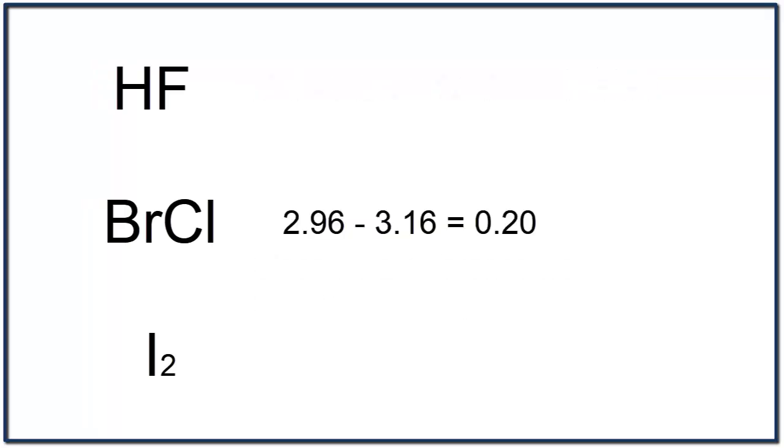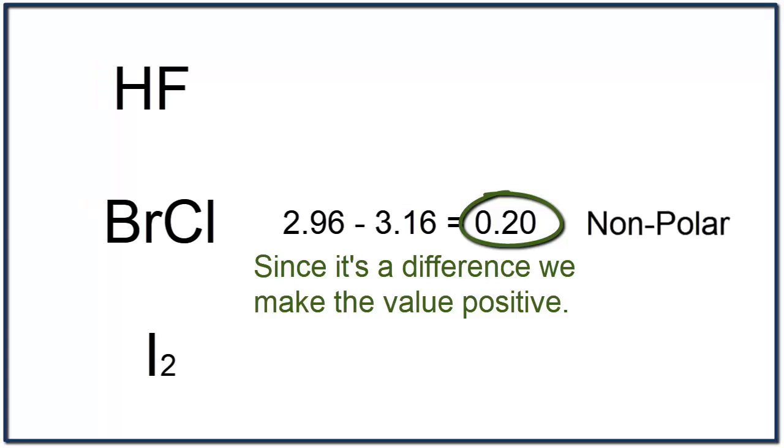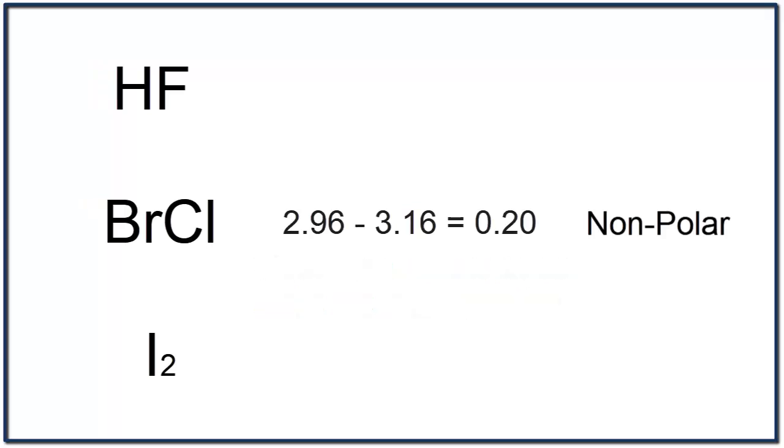For BrCl, the difference is 0.20. We can have different atoms and still have a nonpolar bond. For I2, they're the same. We'll have an electronegativity value of 0. That means I2 is nonpolar.